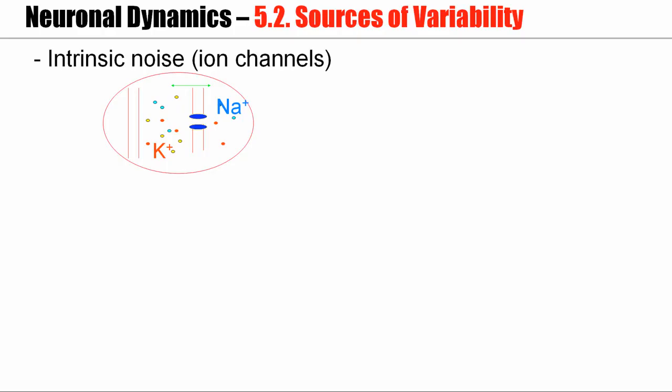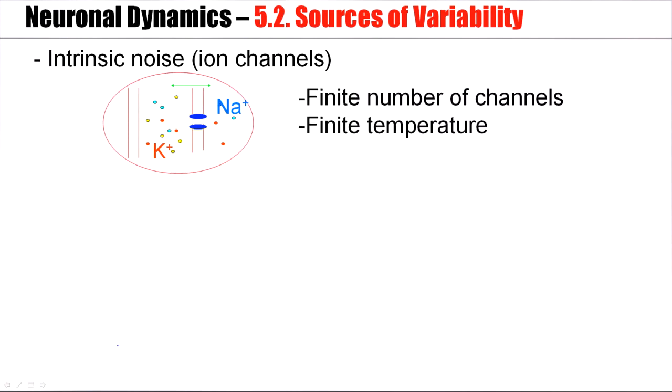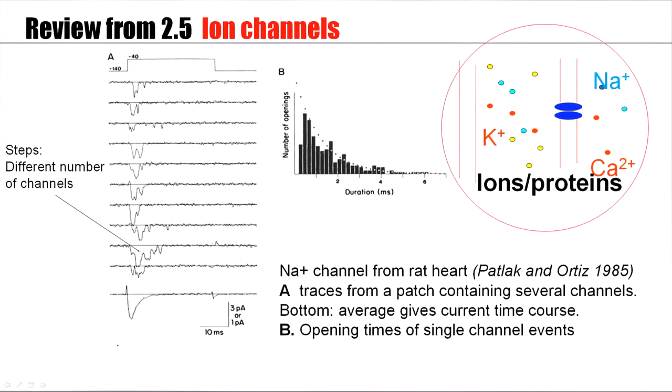One potential source is that there is intrinsic noise in each neuron. We have seen that ion channels open and close, and the number of ion channels embedded in the membrane is limited. The brain is at 37 degrees temperature. At finite temperature, with a finite number of channels, we expect some stochastic effects.